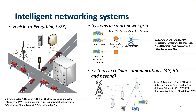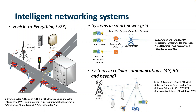The second example is about the intelligent system in the smart power grid, where edge networks are deployed — metering data is generated at the smart meter side and transmitted to a concentrator serving as a gateway through multiple data aggregation points. The third example is about the intelligent system in cellular communication for 4G, 5G, and beyond. These interconnected networks face a variety of cyber threats, both traditional and emerging.